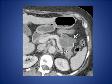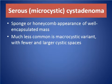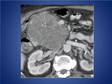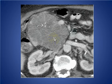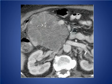This lesion is proven to be mucinous cystic neoplasm. Serous microcystic cystadenoma: it has a sponge or honeycomb appearance of a well-encapsulated mass, much less common than the macrocystic variant with fewer and larger cystic spaces. Here we see a large mass in the region of the pancreatic head with multiple small cysts giving a honeycomb or sponge appearance, associated with dot calcification — consistent with serous microcystic cystadenoma.